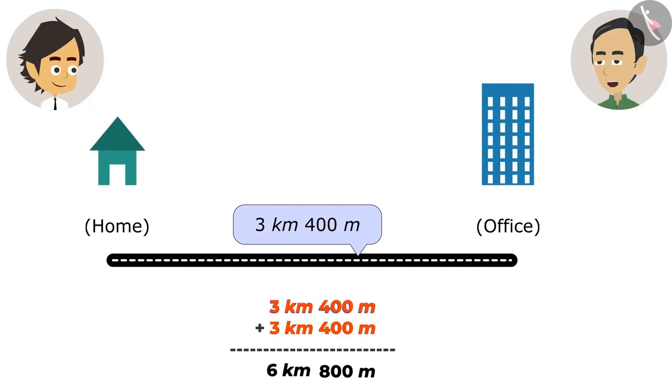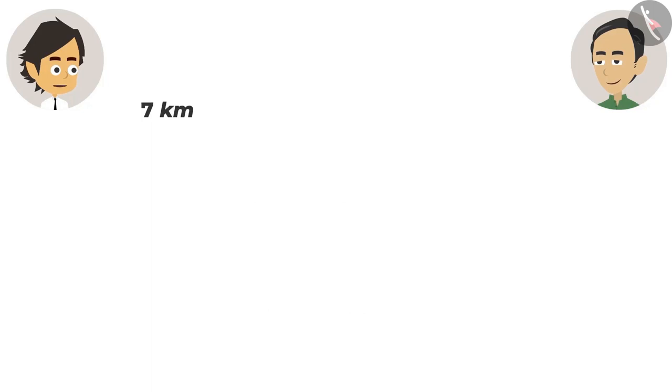One more question. How much less have I traveled from 7 kilometers? If 6 kilometers 800 meters is deducted from 7 kilometers, the answer to your question will be known. Absolutely right. Now subtract. If there is no meter written along with the 7 kilometers, then how can we deduct it?